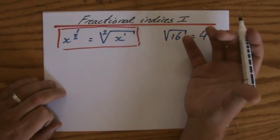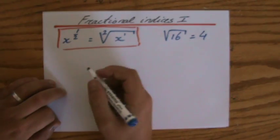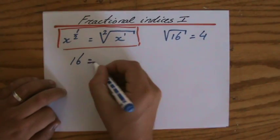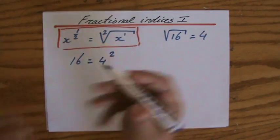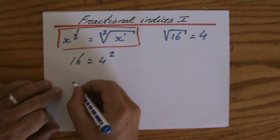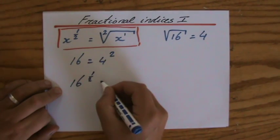Now, let me take this example to prove this rule. 16 can be written as 4 to the power of 2, or 4 squared. Agree? That is the same thing. 16 is the same as 4 squared. And now, I'm saying that 16 to the power of a half, therefore,